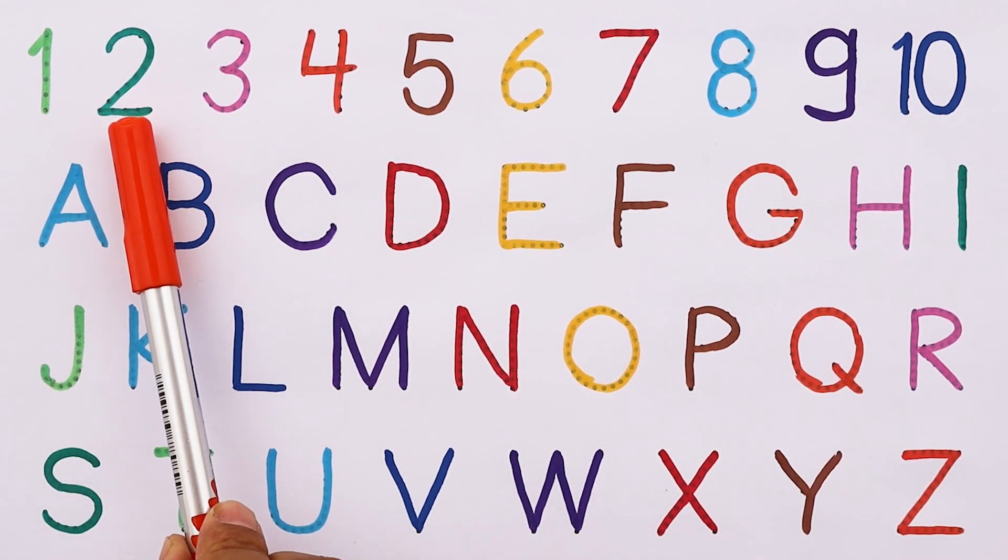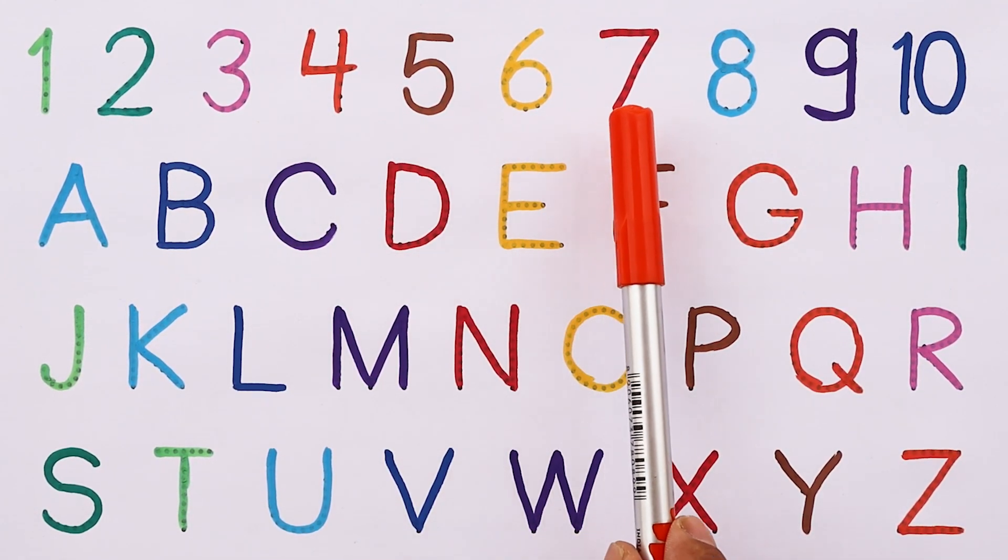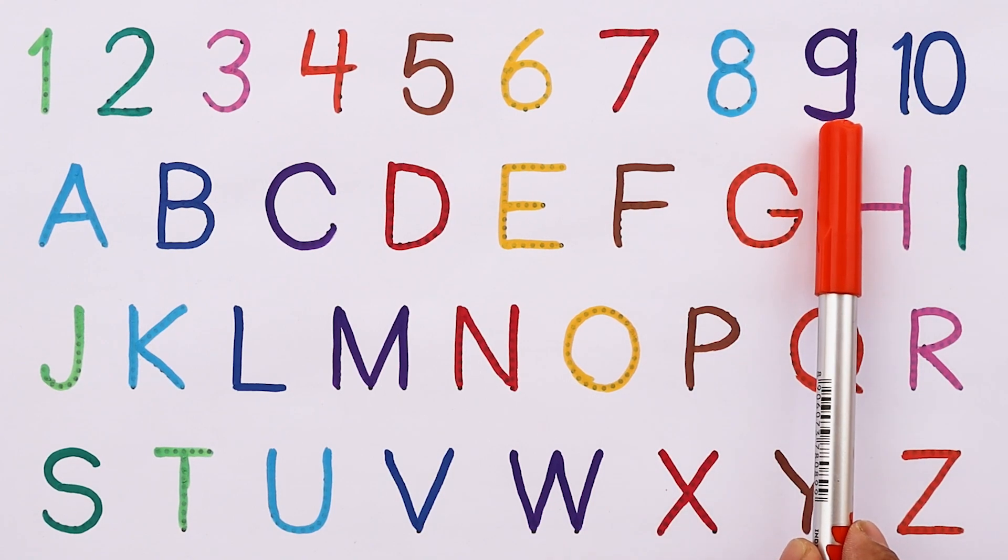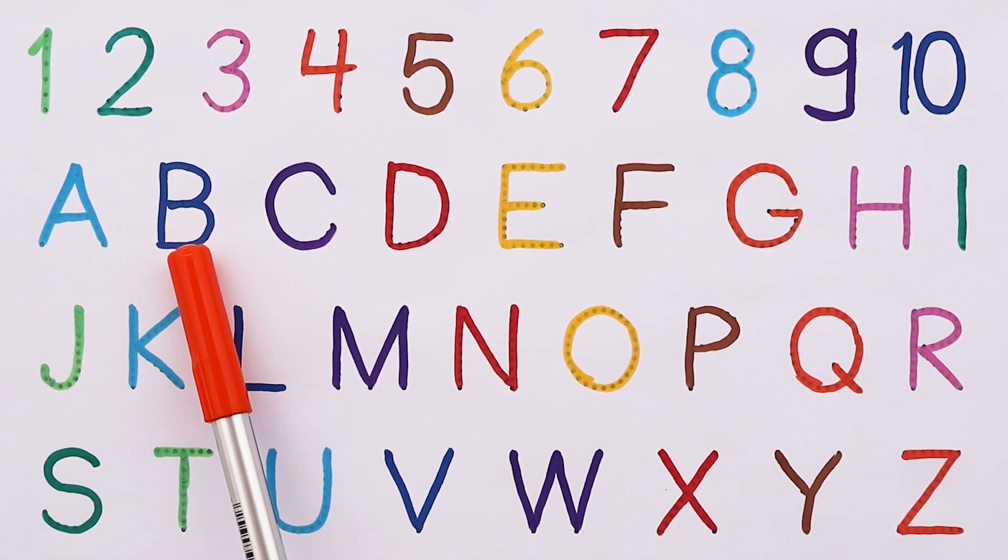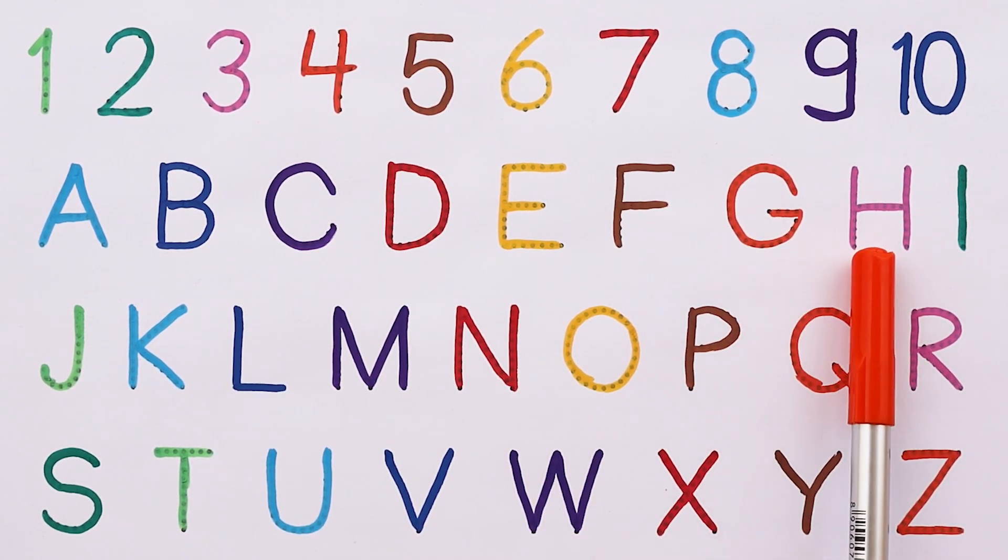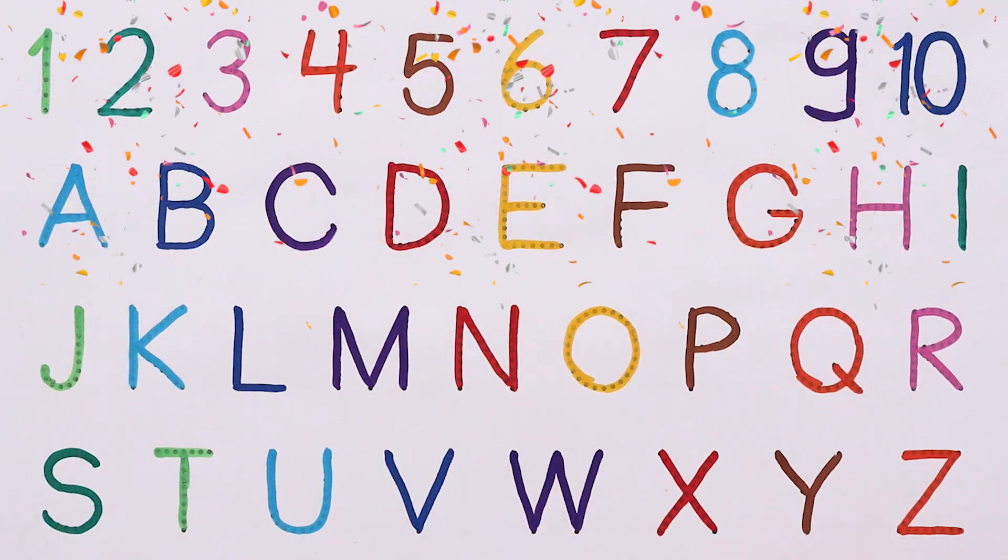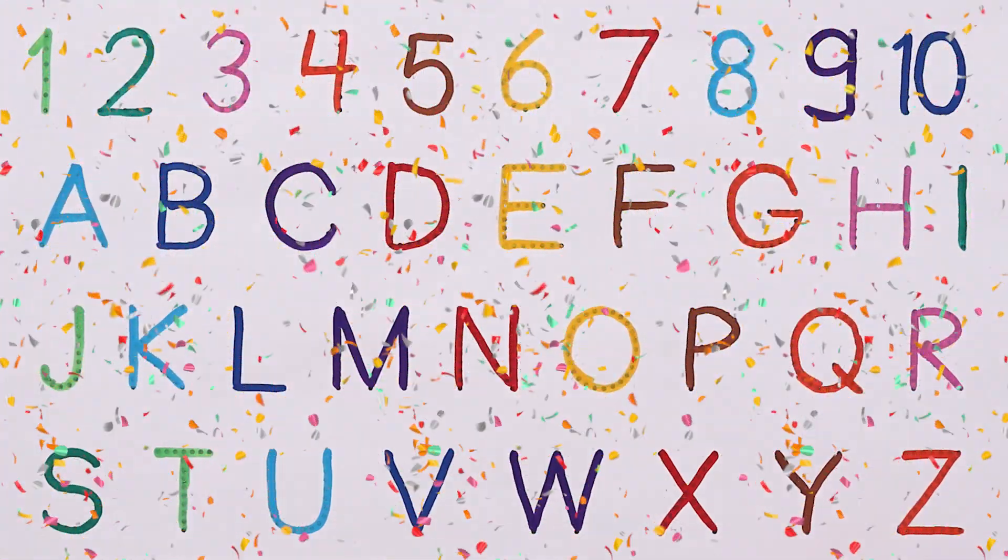1, 2, 3, 4, 5, 6, 7, 8, 9, 10. A, B, C, D, E, F, G, H, I, J, K, L, M, N, O, P, Q, R, S, T, U, V, W, X, Y, Z. Now I know my ABCs. Next time won't you sing with me?